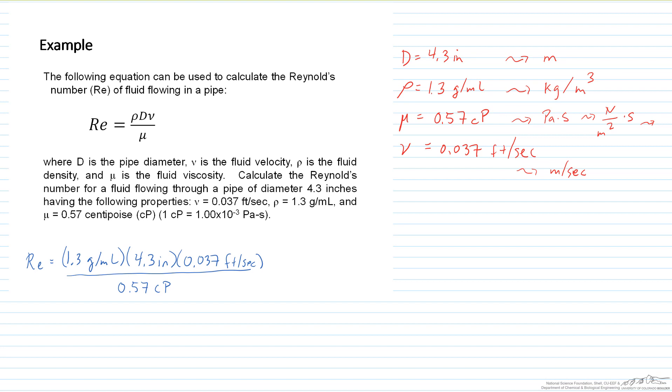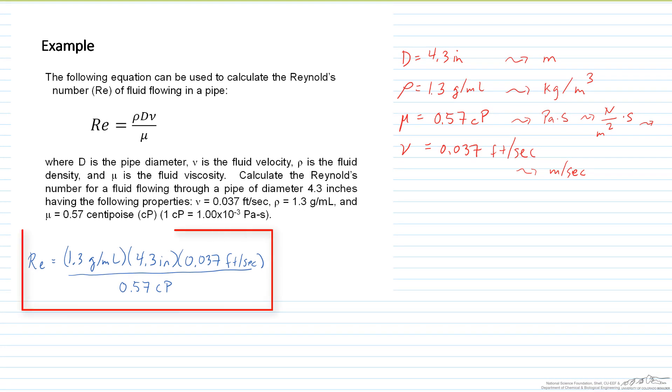So I'm going to start by just plugging in these variables in their original units into the equation for the Reynolds number. Now ultimately Reynolds number is unitless, so it doesn't have any units. The numerator and denominator units should cancel. It doesn't really matter what order you do this in.